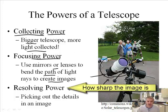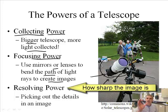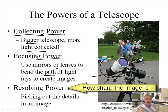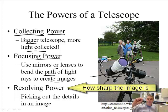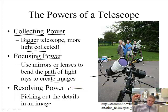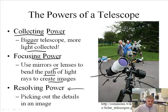The resolving power is the ability to pick out the fine details of an image. Sometimes when you look up at a star in the sky you see one star, but if you look through a telescope it might turn out to be two stars or more. The resolving power of your eyeballs is not good enough to see that those are actually two stars. But if you increase the power of a telescope, you might see there are two stars there — that's the resolving power.